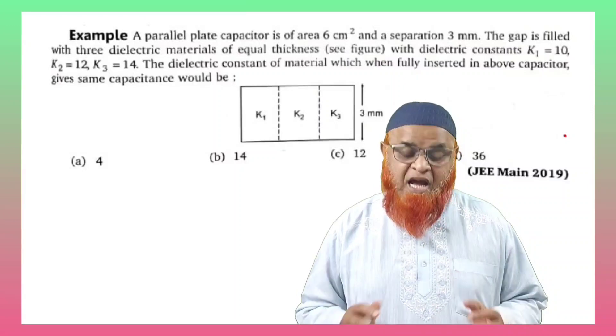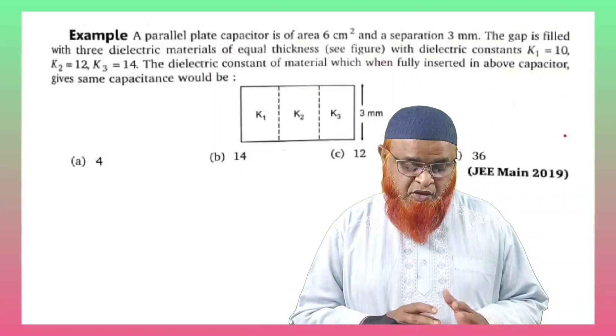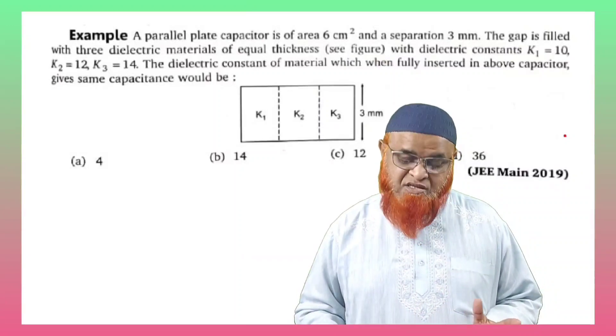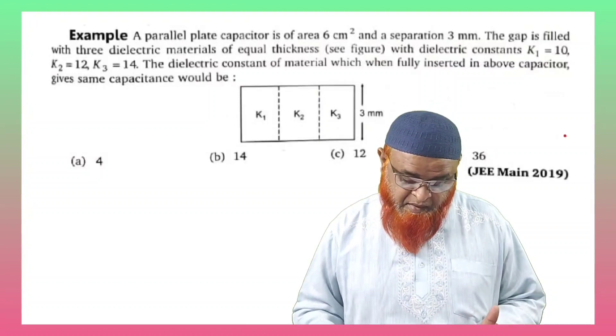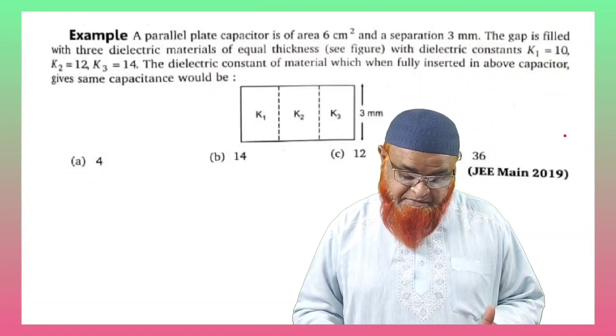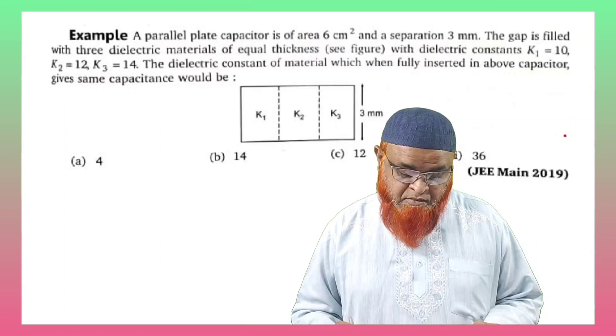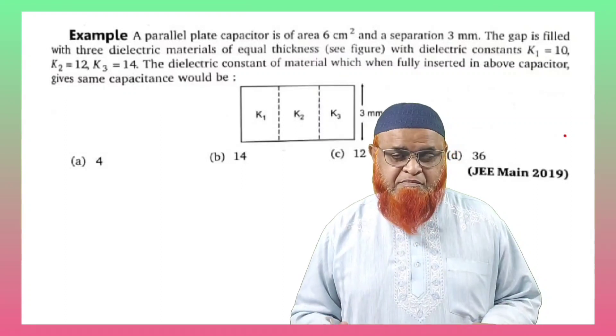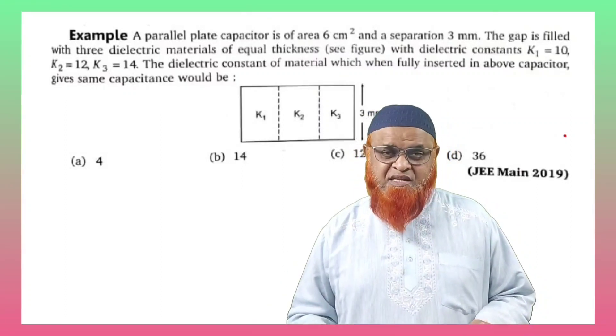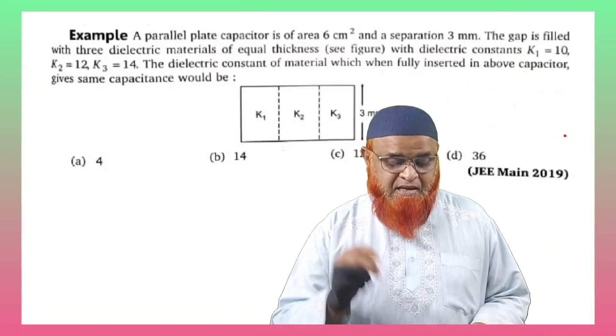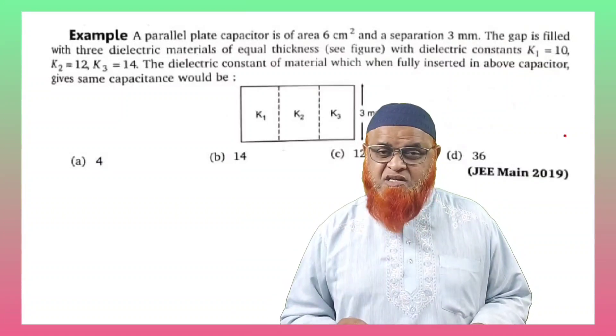It is a parallel plate capacitor. The area of cross section of three capacitors is going to be the same and their separation is 3 mm. A simple shortcut method to solve the problem: there are three dielectric constants given.